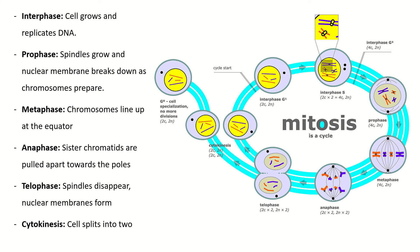Interphase — that's where cells spend most of their life. The cell grows, it lives, it's happy, and if it decides it's going to replicate, then it will replicate its DNA and get ready for mitosis. When we get to mitosis, we've moved from interphase G1 to interphase S. You can see that the DNA has duplicated, forming those characteristic X-shaped chromosomes that we know and love. Then we move from G2 into prophase.